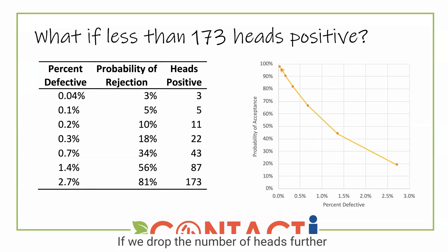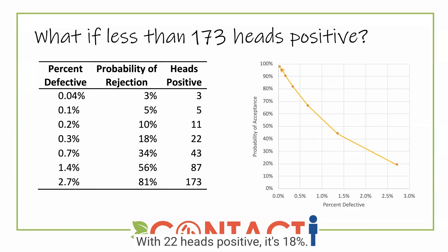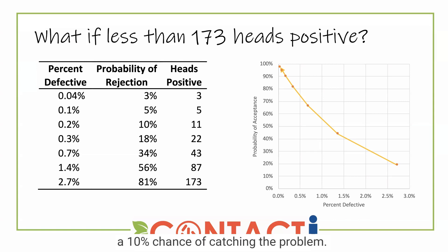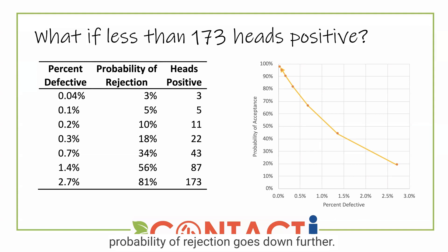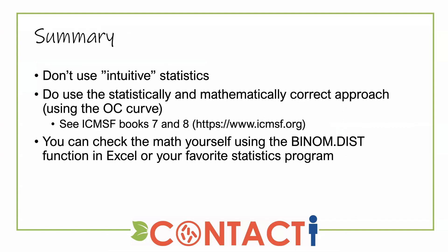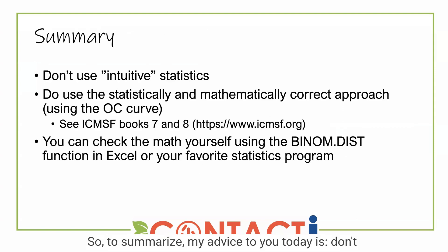If we drop the number of heads further to 43, now it's only a 34% chance. With 22 heads positive, it's 18%. With 11 heads positive, we're down to only a 10% chance of catching the problem, and lower and lower as the probability of rejection goes down further.